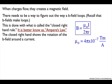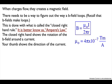To find direction, I'm going to use what I'm calling the closed right-hand rule. In the closed right-hand rule, your thumb is going to represent the current, and your fingers are going to be the field — the B-field or magnetic field. So your thumb is the direction of the current.